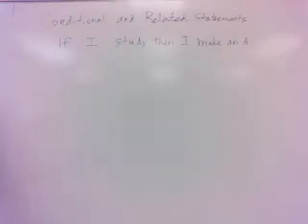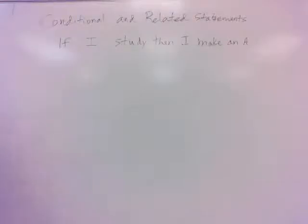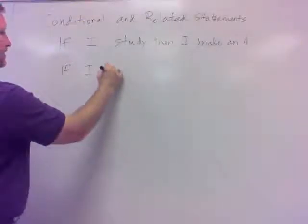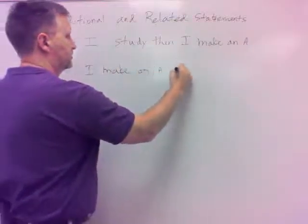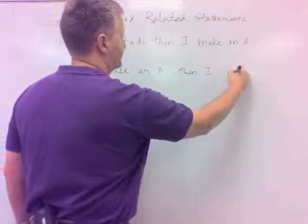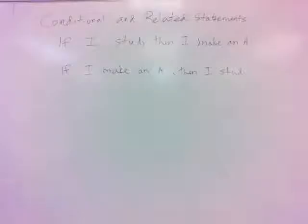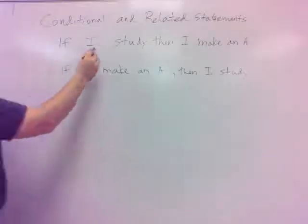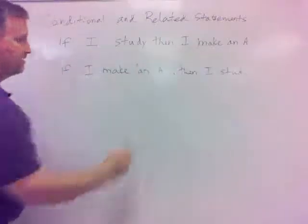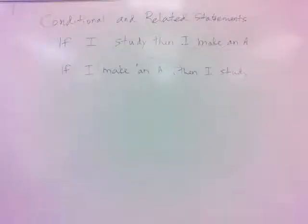I can switch that around, for example, and say, if I make an A, then I study. That's the kind of thing we are talking about — somehow adjusting or changing up the conditional statement to make it ever so slightly different. If I make an A, then I study. What I did there was I flip-flopped the roles of P and Q. I made the 'I study' part the then part, and I made the 'I make an A' part the if part. If you do that, that is called what is known as the converse.